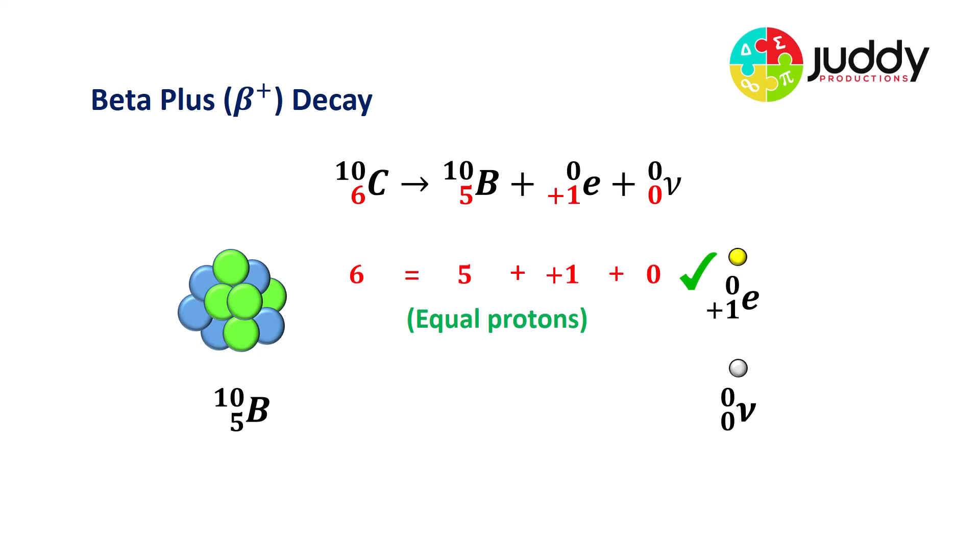So first of all, we notice that there's a conservation of the atomic number. The original carbon 10 nuclei has six as the atomic number. And once it decays, there's a five for boron, plus the plus one for the positron. Six before, six after. So there's a conservation of the atomic number.